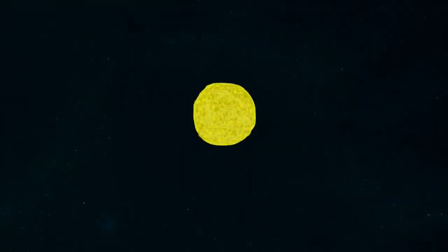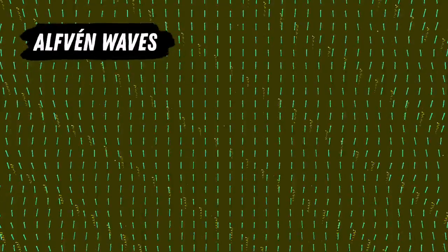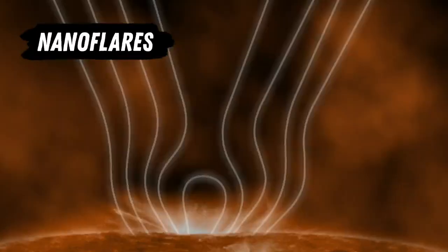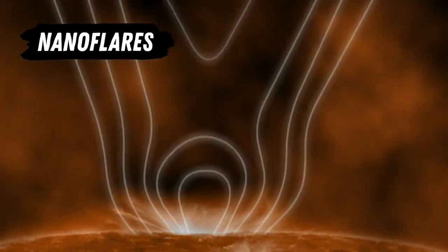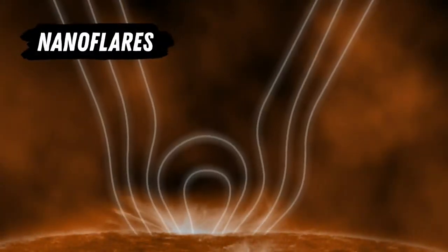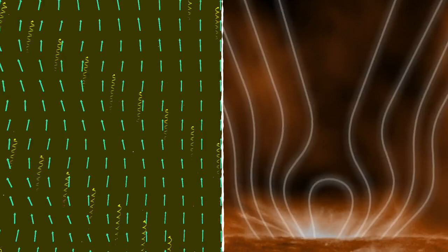Scientists have since proposed a variety of theories for what mechanisms could be adding that extra heat into the atmosphere. One theory suggests that small waves in the sun's surface push particles and heat into the atmosphere, a bit like how ocean waves push surfers. Another theory suggests small bomb-like explosions from the realignment of the sun's magnetic field create heat. Many scientists think it may be a mix of both.